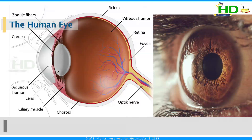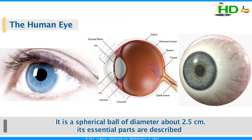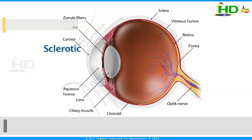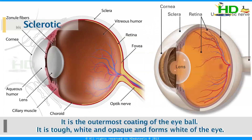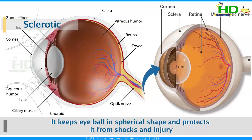This is the human eye and the shape is a spherical ball with a diameter of about 2.5 cm. The main parts of the human eye include the sclerotic — it is the outermost coating of the eyeball. It is tough, white, and opaque and forms the white of the eye. It keeps the eyeball in a spherical shape and protects it from shocks and injury. This part is the sclerotic and this is the eyeball.